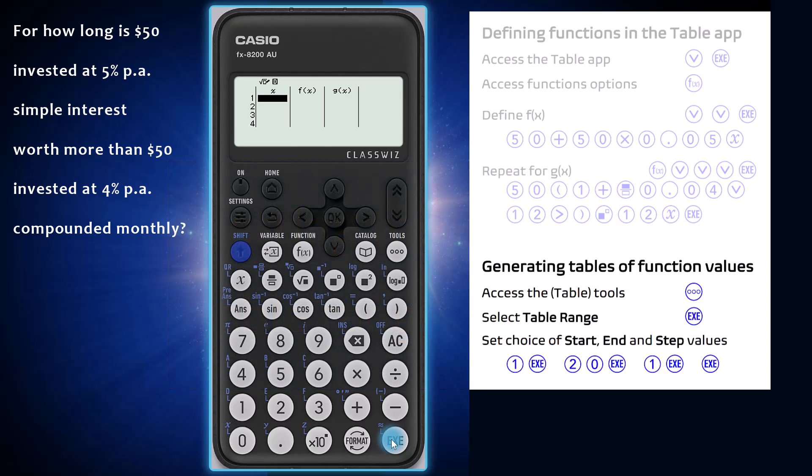With functions defined, a table of values can be generated. Press the tools key and choose table range. Enter appropriate start, end and step values. My table will start at 1, end at 20 years and go up in steps of 1.